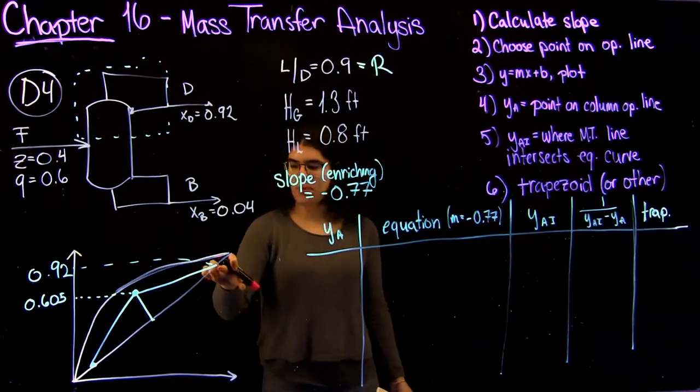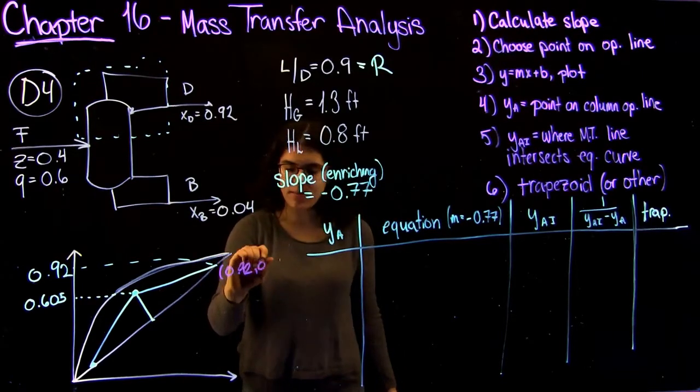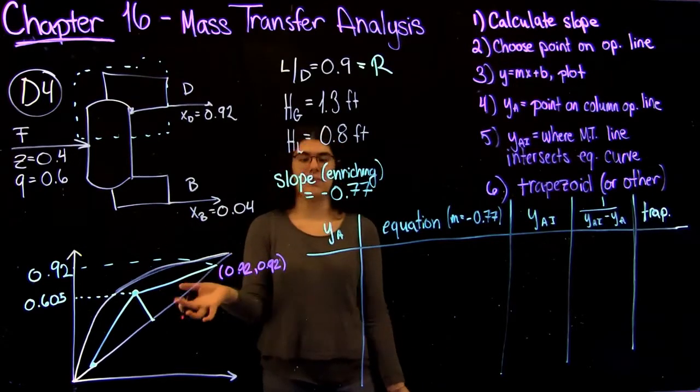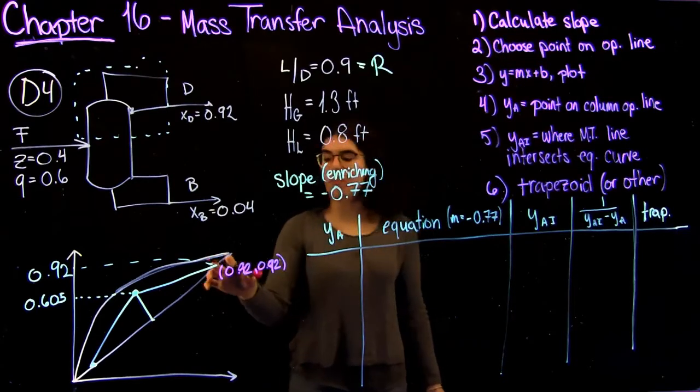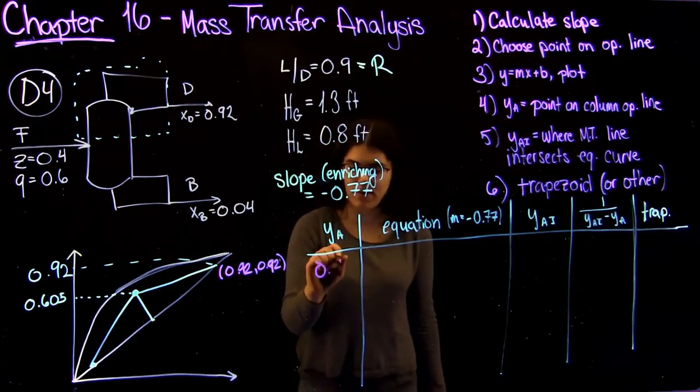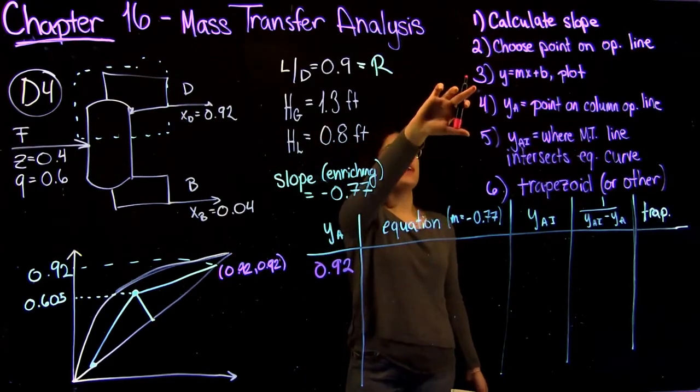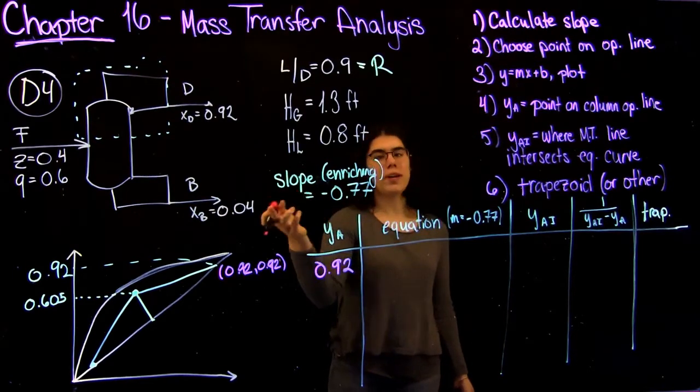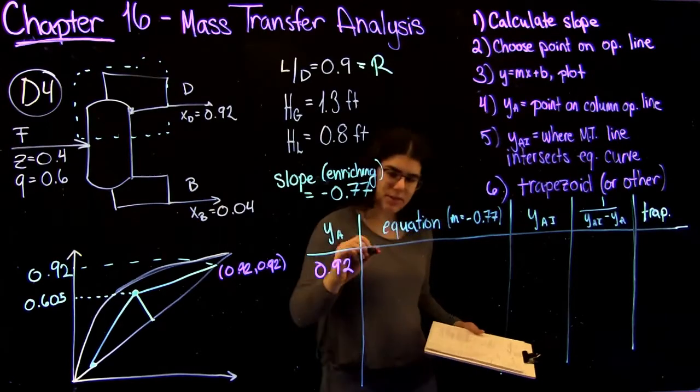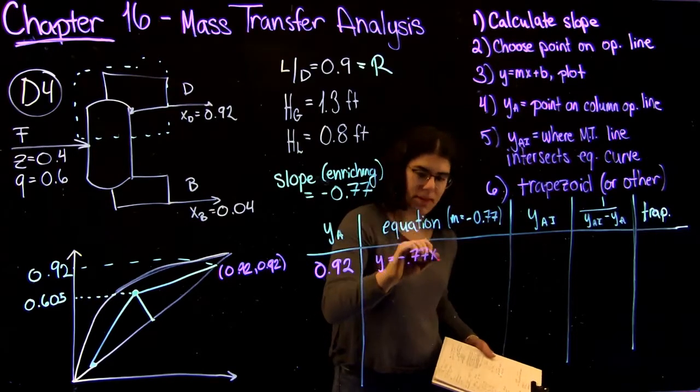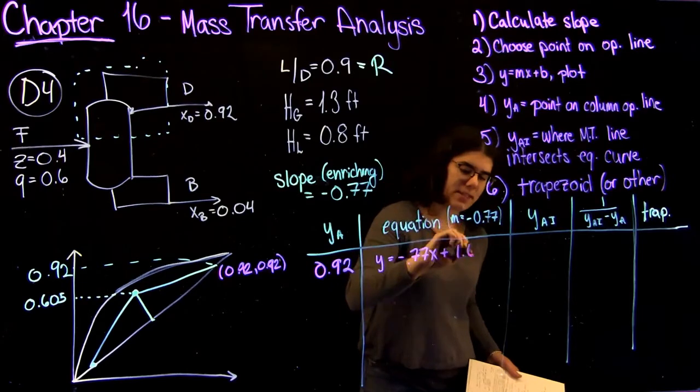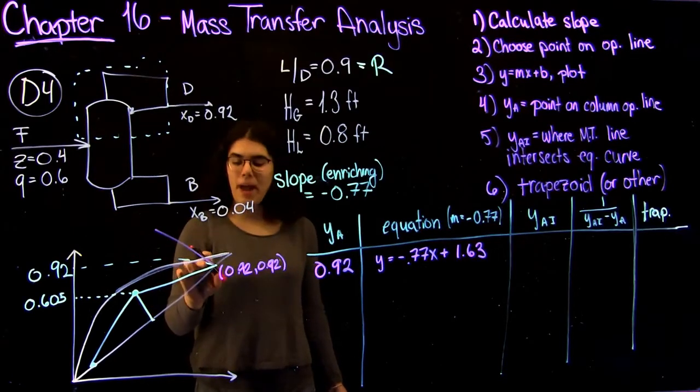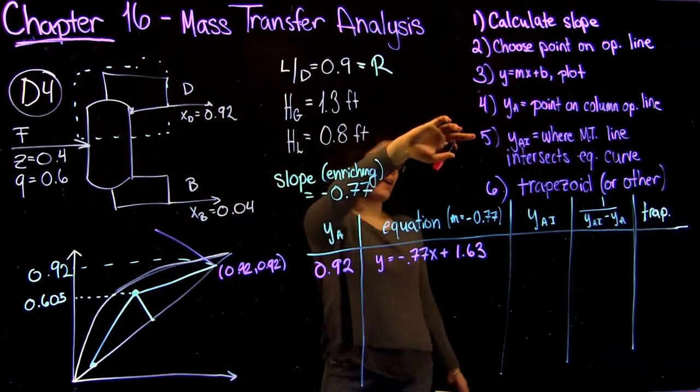The next thing we're going to do is choose a point on the operating line. For this one, I'm going to do our very first point at the top, so that's the point 0.92. I've made a table that I suggest you use every time because it helps you stay organized. Our YA is our y value of the point we chose on our operating line. For this first point, that's just going to be equal to 0.92. The next step is we're going to find an equation for our mass transfer line using this point. Since we know y equals mx plus b, we have our point and our slope, we can just plug everything in to find our intercept. For this first one, you're going to get y equals negative 0.77x plus 1.63. Now we have this line and we can plot it. Now that we have it, you'll see that it intersects the equilibrium line.